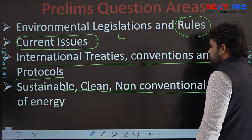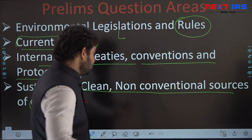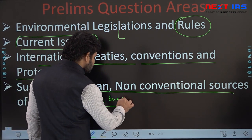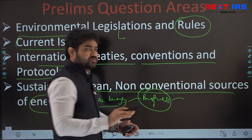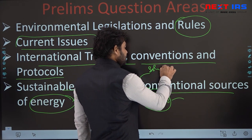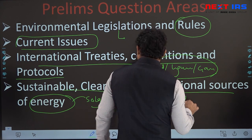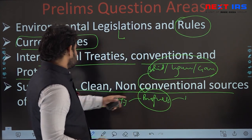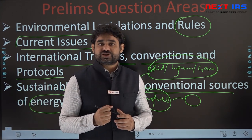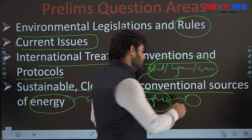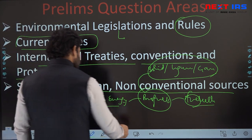Sustainable and clean non-conventional sources of energy is another area. Questions come from solar energy, biofuels — including solid, liquid, and gaseous biofuels — and biomass-based fuels. Under non-conventional sources, questions may also relate to methane clathrates, shale gas, and fuel cells. New developments with respect to clean, affordable, modern energy sources also generate questions in the examination.